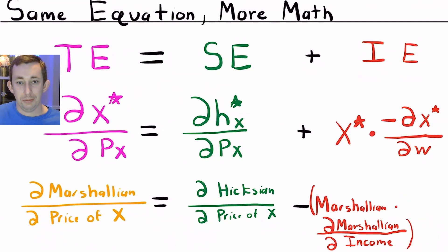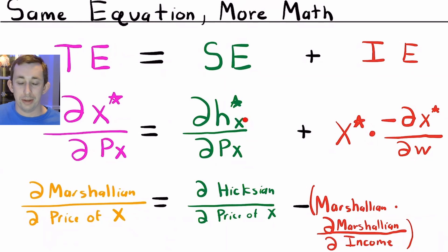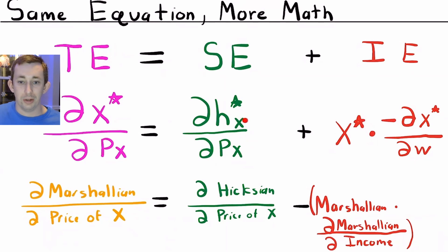In a previous video, we talked about why ordinary goods always have a negative substitution effect. When the price of that good goes up, you should always substitute away from that good towards another good. So the substitution effect is always negative if the price of Chipotle goes up — the quantity of Chipotle should always go down, and the quantity of the other good should always go up, because you're substituting away from the more expensive good. It would be the opposite if the price went down.